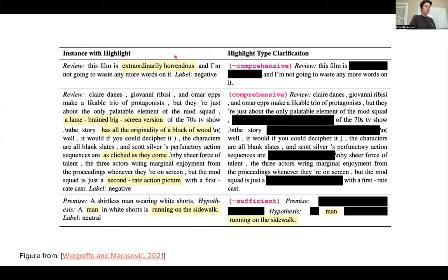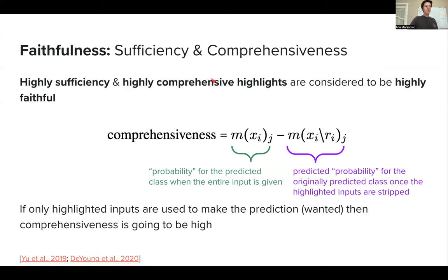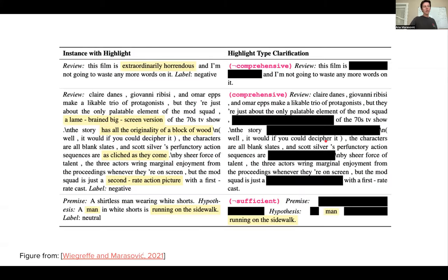Let me show you an example of what could be a comprehensive versus non-comprehensive highlight. In the first example, 'extraordinarily horrendous' is highlighted in yellow — obviously suggestive that the label is negative. Comprehensiveness says: now remove what you've highlighted from the input and see whether you can still predict the original label, which is negative. What's left is 'this film is... and I'm not going to waste any more words on it.' That's kind of suggestive of a negative movie review — so this would be an example of a highlight that's NOT comprehensive, because something beyond it can still suggest the label.